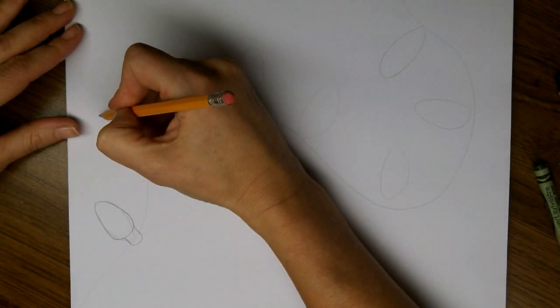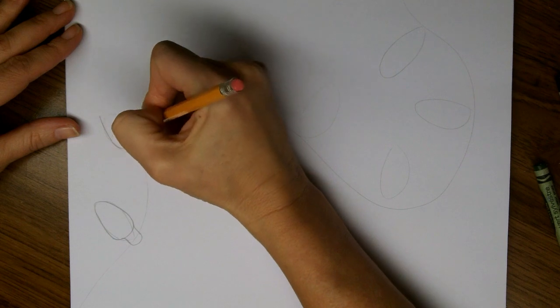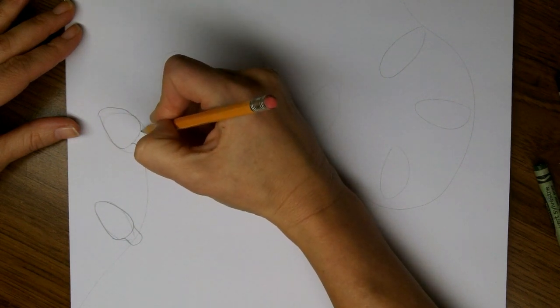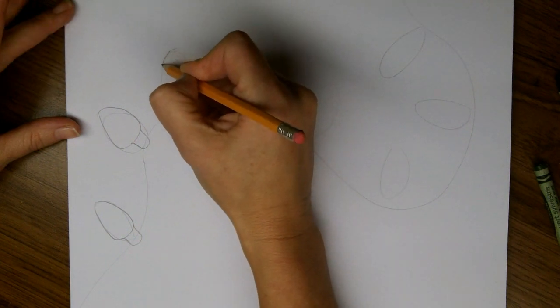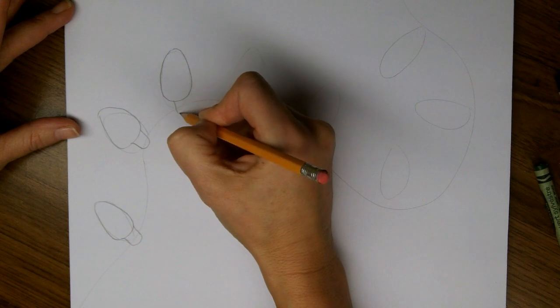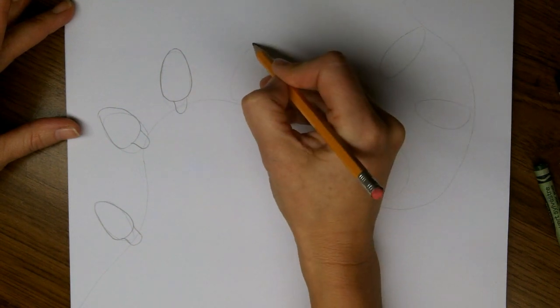And then we're going to draw a U as the connector. So we have an egg shape and a U, and the U is going right over the wire.